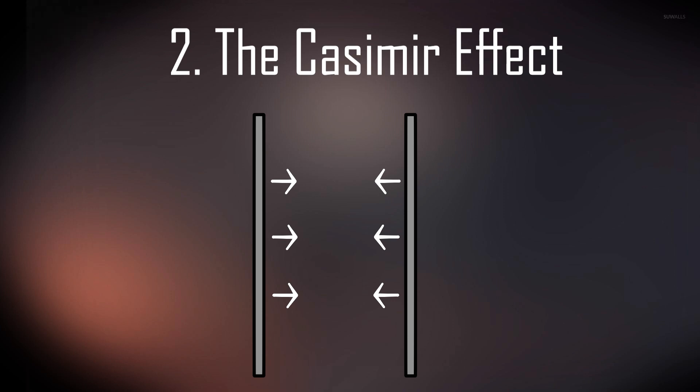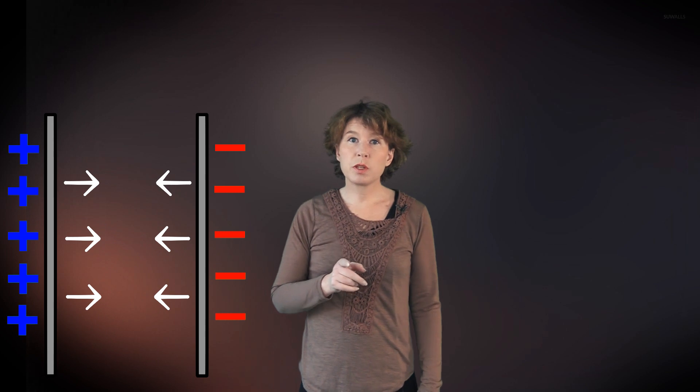2. The Casimir effect. Everybody knows that two metal plates will attract each other if one plate is positively charged and the other one negatively charged. But did you know the plates also attract each other if they are uncharged? Yes, they do.